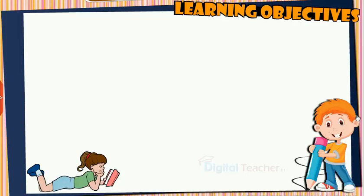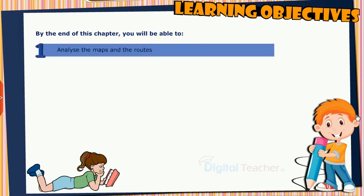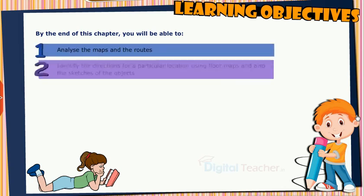Learning Objectives: By the end of this chapter, you will be able to analyze the maps and the routes, identify the directions for a particular location using floor maps and also the sketches of the objects.